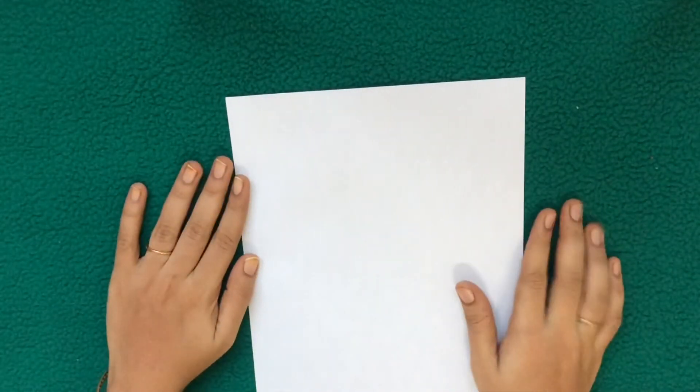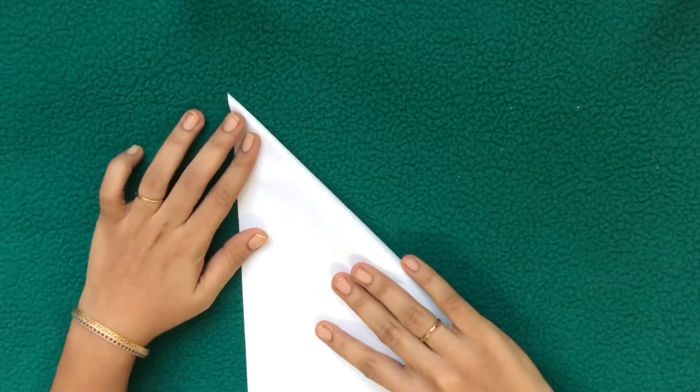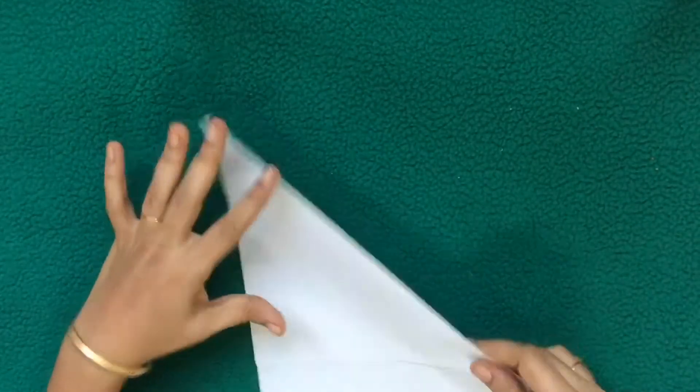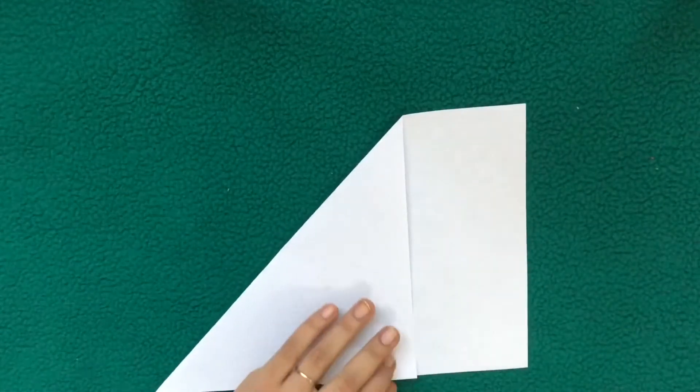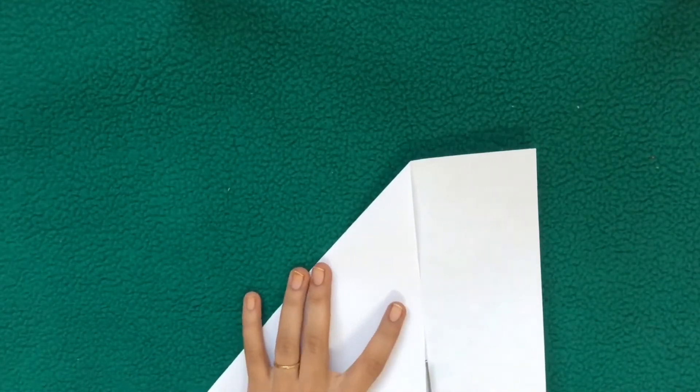Yes, that is triangle fold. Next, I will show you how to cut a square. Take a paper, make a triangle fold, crease it, then just have to cut the extra part.